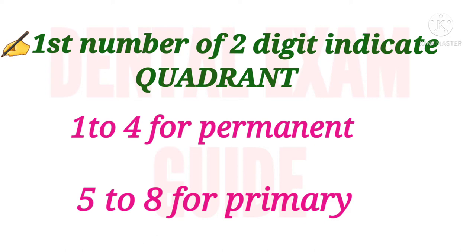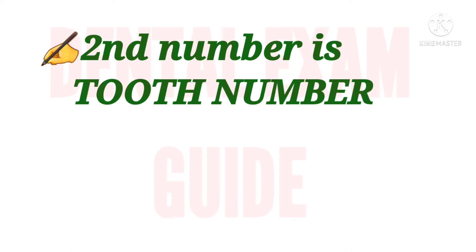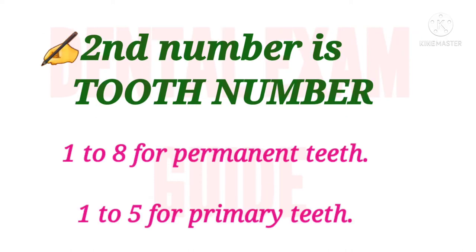The first number of the two-digit system indicates the quadrant. Numbers one to four are used for permanent dentition and five to eight for primary dentition. The second number refers to the tooth number within each quadrant. Numbers one to eight are used for permanent teeth and one to five for primary teeth. It is a combination of the Palmer numbering system with a prefix number to denote the quadrant.